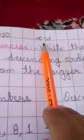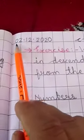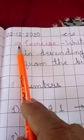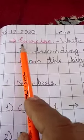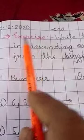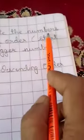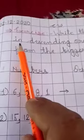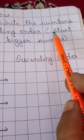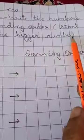Write down CW at the top. On the left hand side, write down today's date: 2-12-2020. Just below, with red pencil, write down exercise.